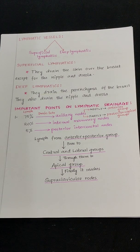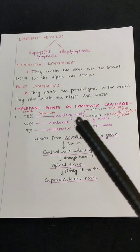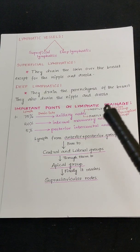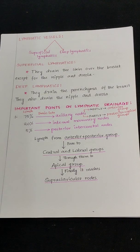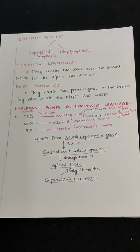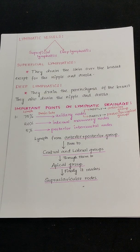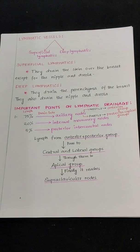Now for some important points on lymphatic drainage of the breast: 75% of the lymph drains into the axillary nodes, mostly into the anterior group and partly into the posterior and apical groups. 20% drains into the internal mammary nodes and 5% into the posterior intercostal nodes.